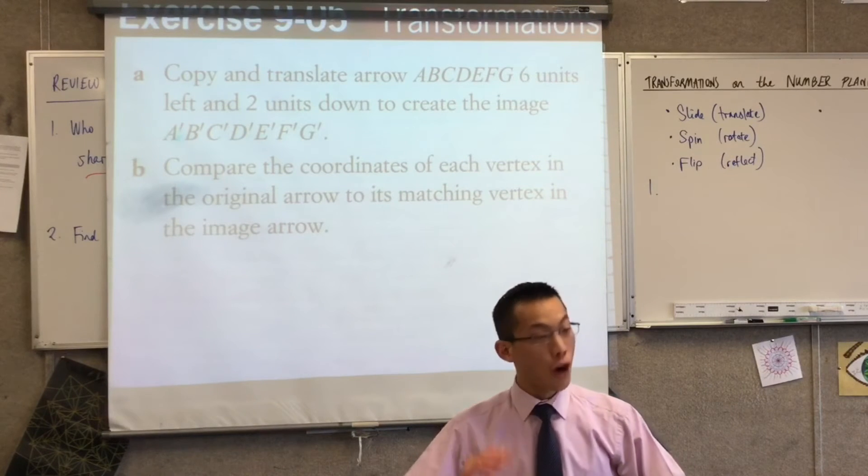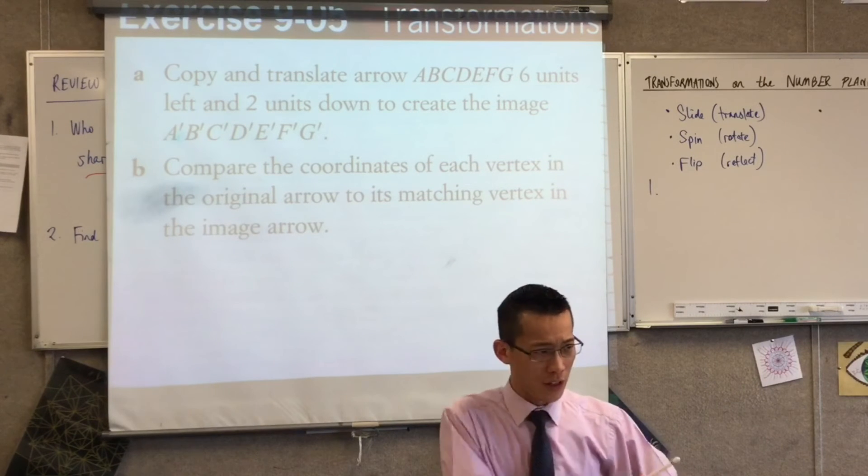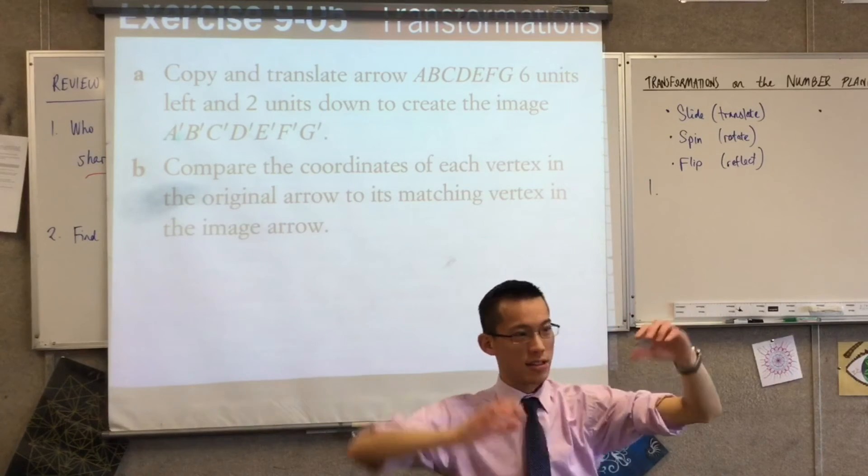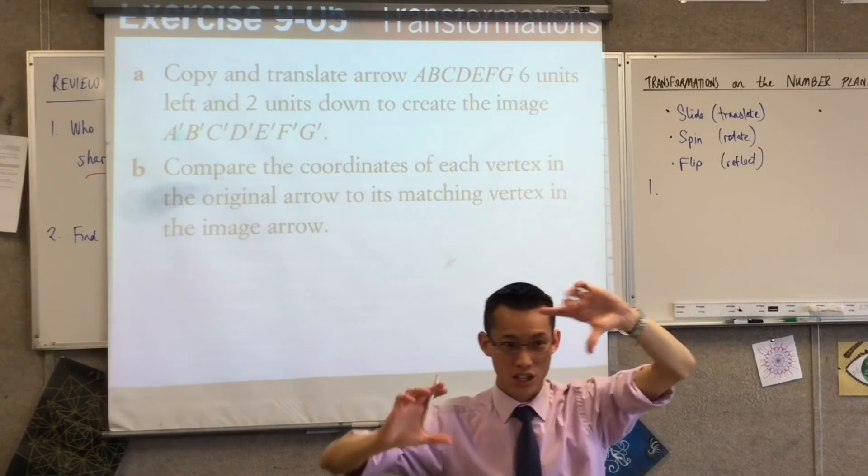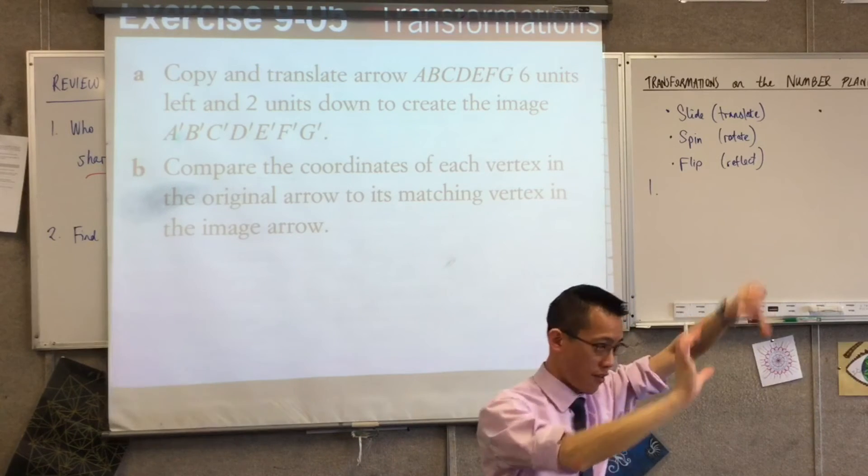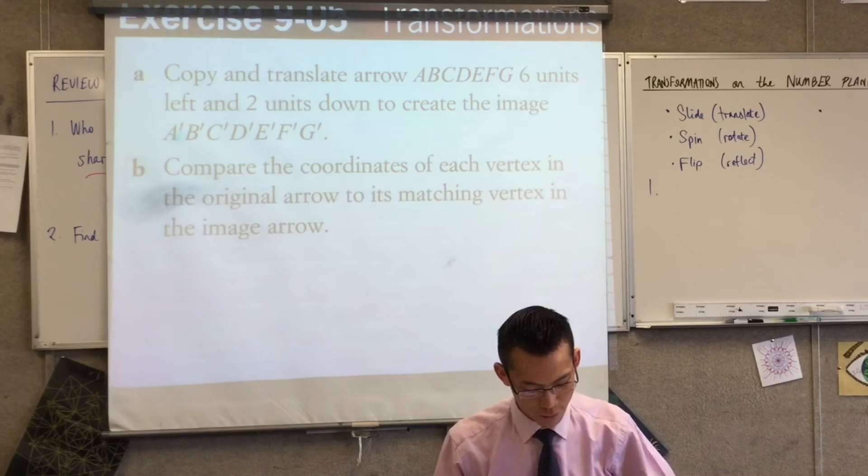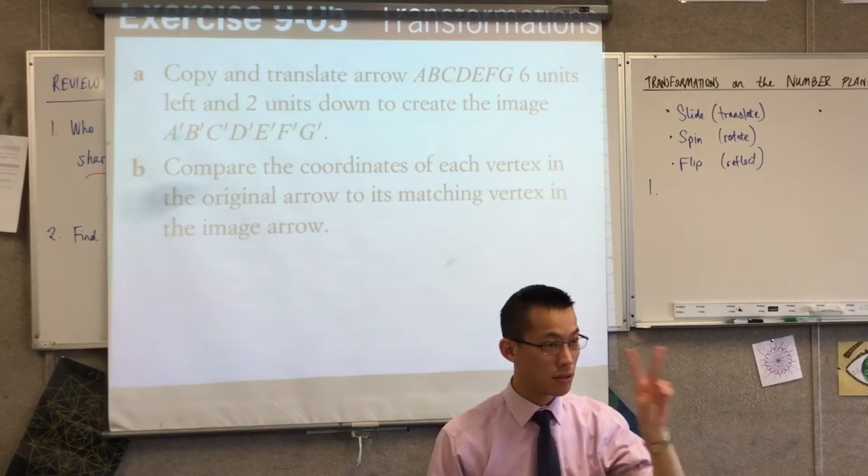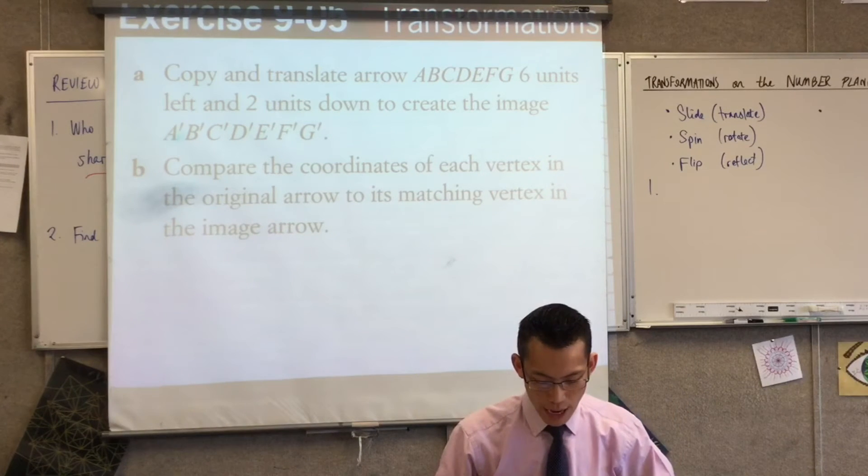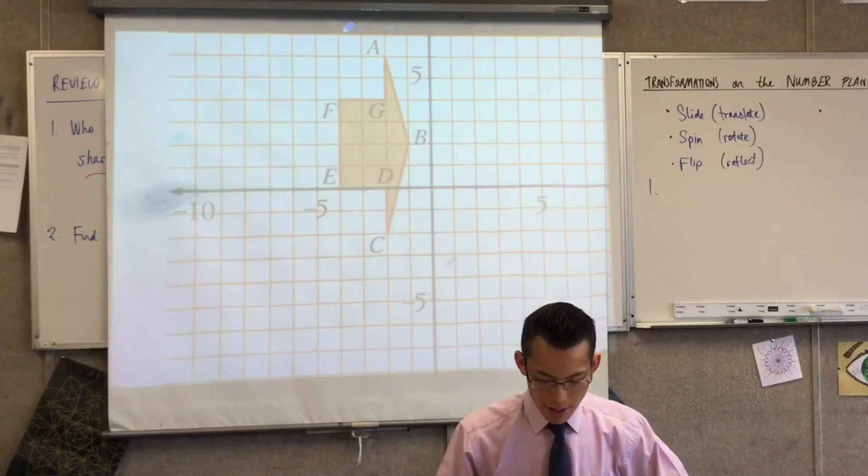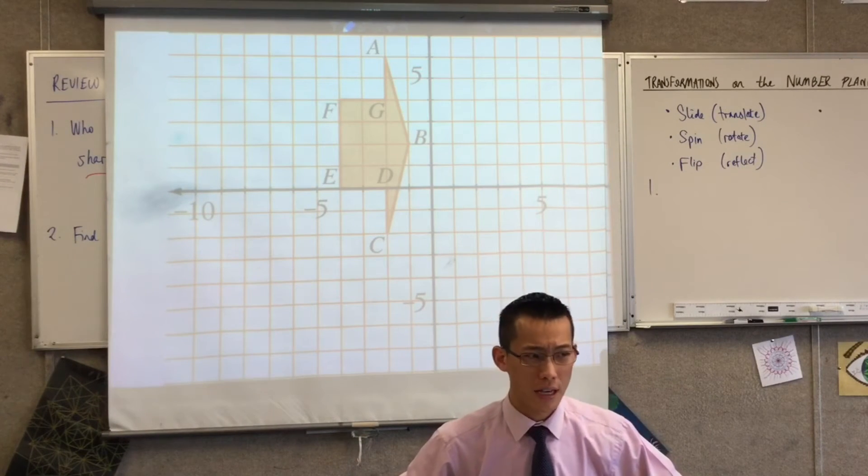It says copy and translate. You've done the copy bit. Then when you have to translate, we are sliding. So this thing's going to stay the same size. It's going to stay facing the same way and I'm going to sort of move it around like this. It says six units left and two units down. Okay, so now if you have a look at where your shape is, right?